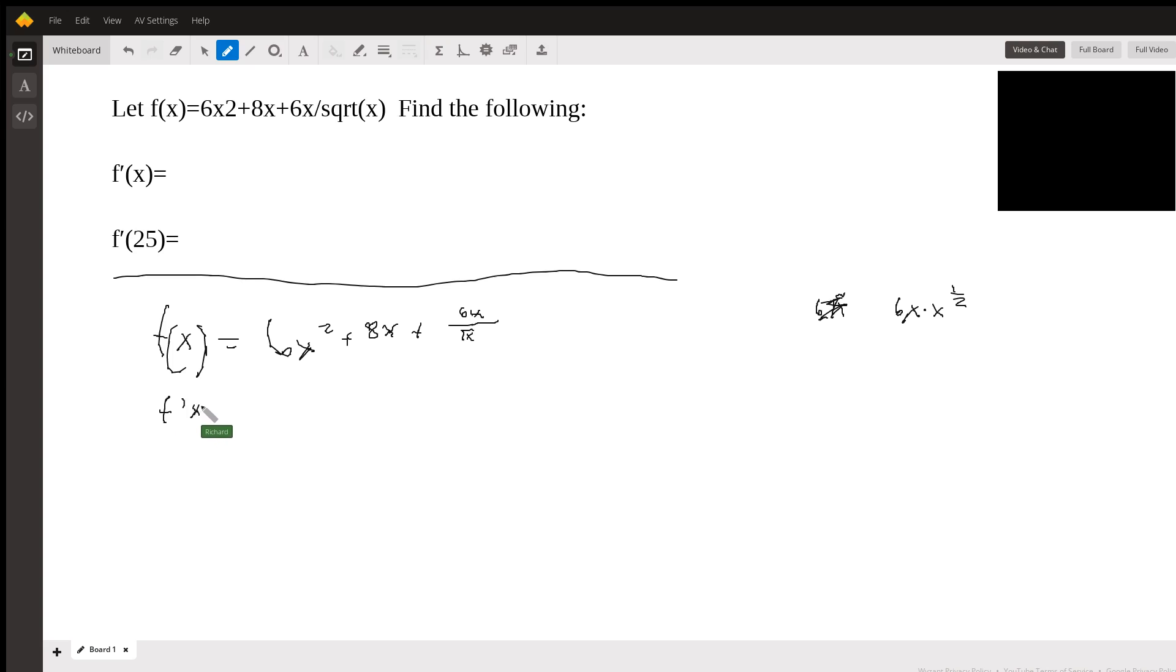So f prime of x is going to be, for this term we're going to use the power rule, so it's 2 times 6, which is 12x. And then we'll use the power rule again. So this just becomes 8, because it's 8 times 1 times x to the 0 power, which anything to the 0 power is just 1. I just want to show you the steps here so you're not confused. We're using the power rule both times. The power 2 goes down to power 1, power 1 goes down to power 0.